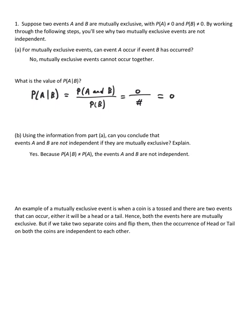Using the information from part A, can you conclude that events A and B are not independent if they are mutually exclusive? Explain. Yes, because the probability of A given B is not equal to the probability of A. The events A and B are not independent.